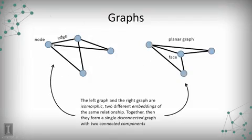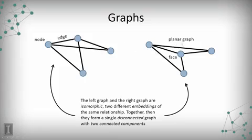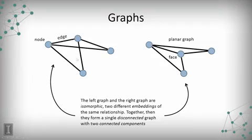On the left, I've got a graph of four nodes connected by five edges, and on the right, I've got four nodes connected by five edges. These two graphs are isomorphic — they're the same graph, just laid out differently. On the right, I've got a planar graph, where nodes and edges are laid out so that none of the edges cross each other. We can speak of a face as the region bounded by a cycle of edges starting and ending at the same node. These are two different embeddings of the same graph.